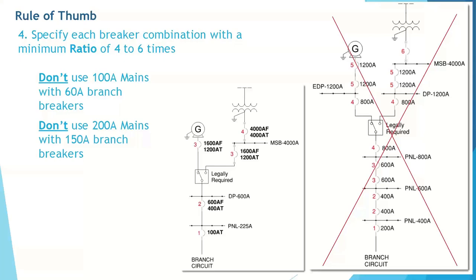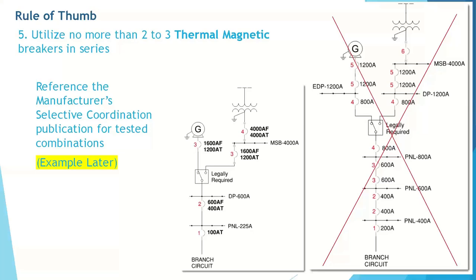For 3D, we may need to specify all breakers, including parallel loads that don't require code-enforced selectivity with electronic trip units and ZSI. We will define these parallel non-code-enforced loads later on as last-in-line breakers for ZSI. The fourth rule of thumb is for ratio. Try to design your system with a minimum ratio of 4 to 6 times between levels for the breaker. You don't want to use 100-amp mains with 60-amp branch breakers. You want to shoot for at least a 4 times ratio. The final and fifth rule is to reduce thermomagnetic breakers in series as much as possible, no more than 2 or 3. You will likely also need to reference a manufacturer's selective coordination publication for tested combinations of these breakers.